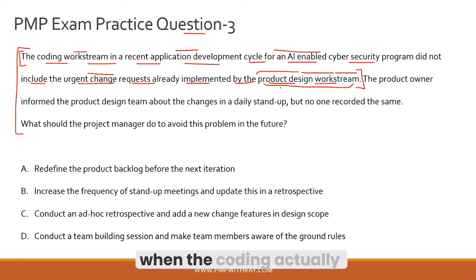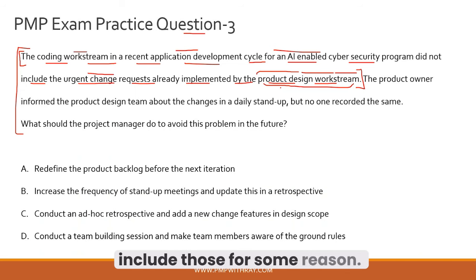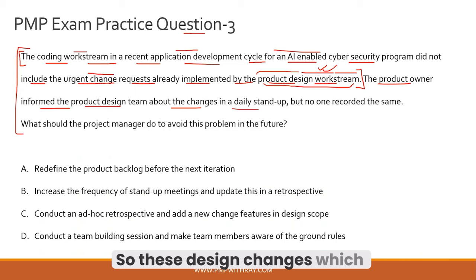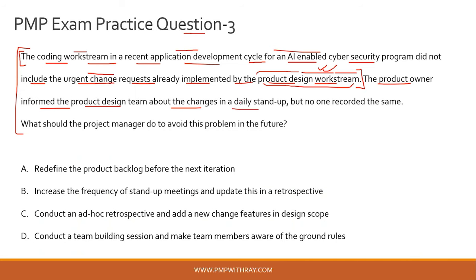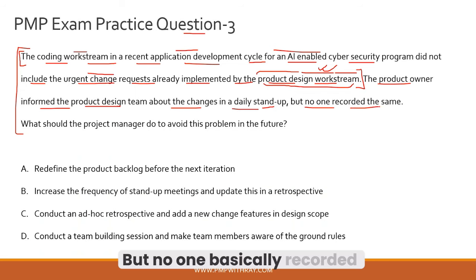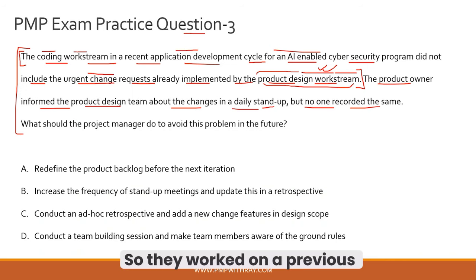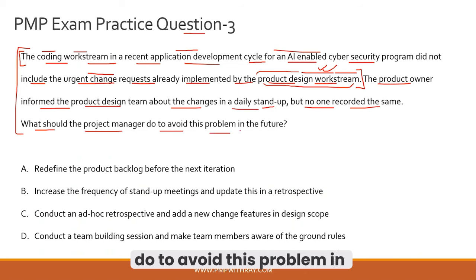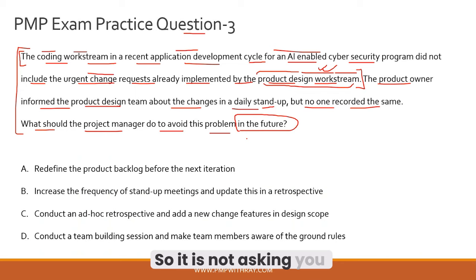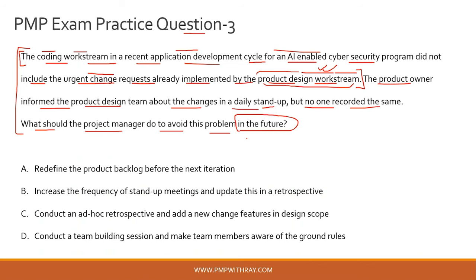The product owner communicated the design changes during a daily stand-up, but no one recorded them. As a result, the changes were lost in translation — everyone forgot, and when the coders started coding they didn't have the input that changes were needed, so they worked on a previous design version. The question asks: what should the project manager do to avoid this problem in the future? Note the keyword — 'in the future,' not solving something now.